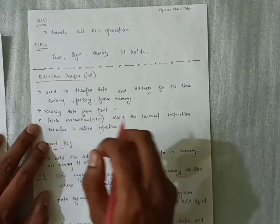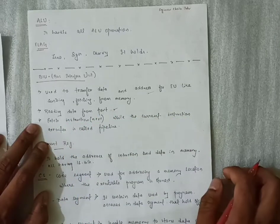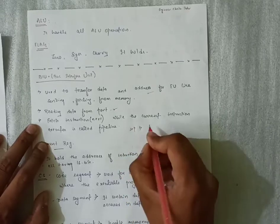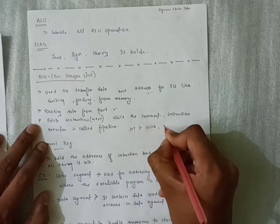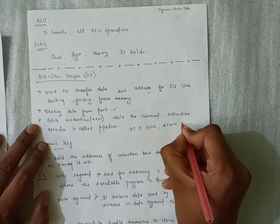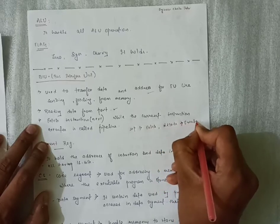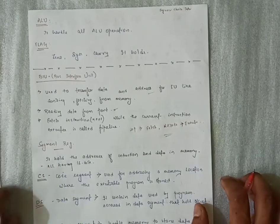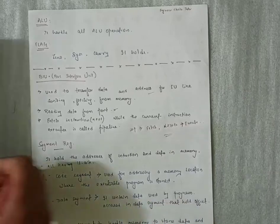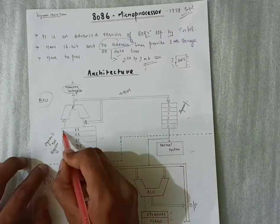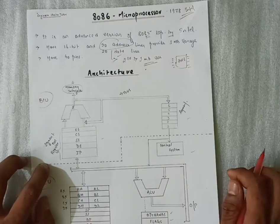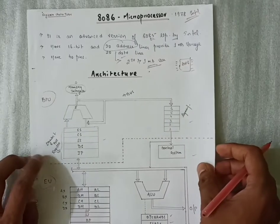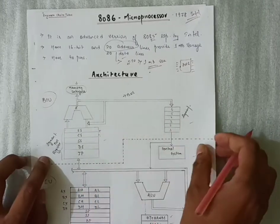We are using this to read data. The main purpose of a microprocessor, as I discussed in the previous lecture, is to fetch the data, decode it, and lastly execute it. These three main tasks are involved in the microprocessor, and the Bus Interface Unit will also perform the same. Coming towards the segment registers — each register has 16 bits of memory. We will now discuss each and every register one by one.